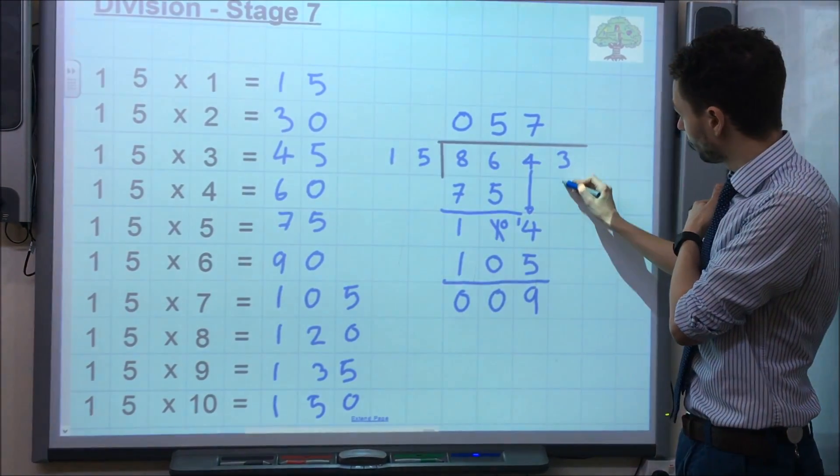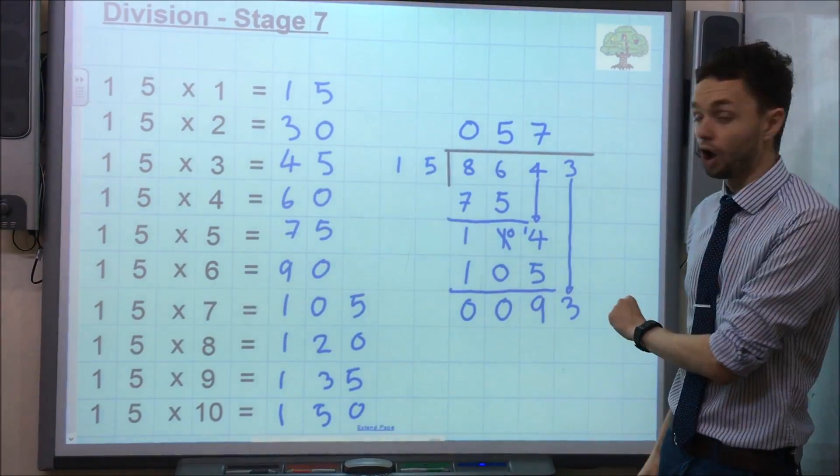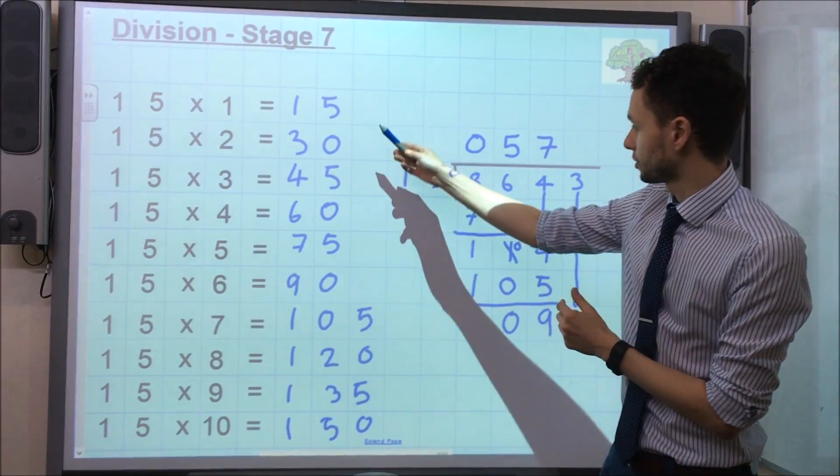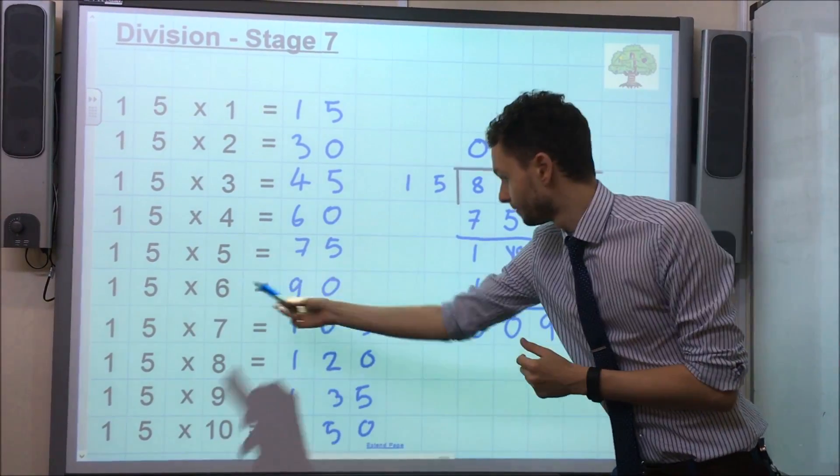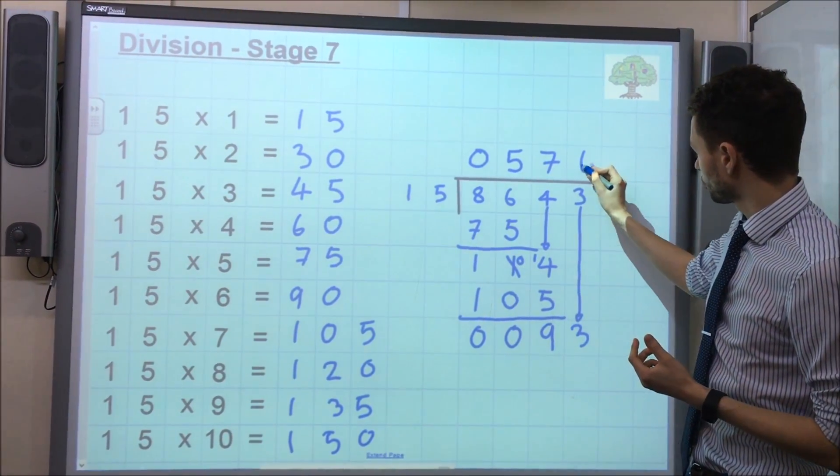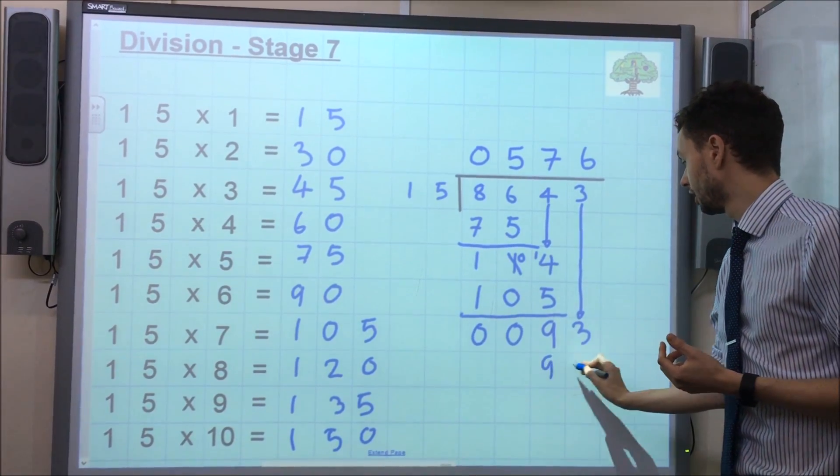Then, we pull down the next number, which is 3. So, that 9 now becomes 93. And we ask how many 15s go into 93. Using our times table facts, we can see that 15 times by 6 is the closest answer. So, that 6 goes at the top and then the answer to 15 times by 6, which is 90, goes underneath.